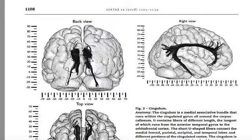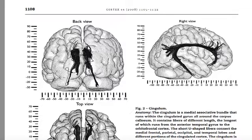Una clave para acordarse que este es el lóbulo temporal puede ser que es básico para la memoria, para el tiempo en la persona. El sector que comienza con la cisura calcarina es el lóbulo occipital. La parte superior llegando hasta aquí es el lóbulo parietal. Y esta parte es el lóbulo frontal, que suele dividirse en prefrontal y frontal propiamente dicho.